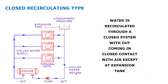In a closed loop system, specifically for the chilled water line, a pump circulates water through the chiller. High-temperature water is cooled down to 44°F (7°C) and pumped to the terminal unit or air handling unit. The same water returns and is recirculated — this is called a closed loop recirculating system.